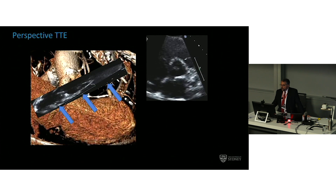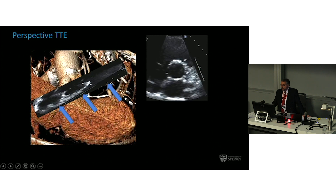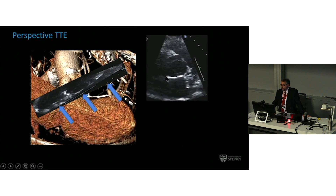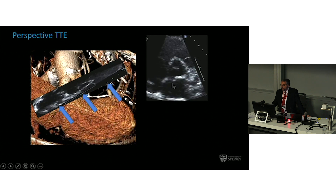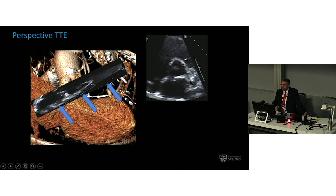In all of transthoracic echo, you're looking from below. Looking at this picture — a typical parasternal short axis — you're standing at the feet or at the apex and looking up. Think about your landmarks: there's the atrial septum, so by definition this is the non-coronary cusp. The most anterior one is always the right coronary cusp, and there's the left atrial appendage — therefore that is the left coronary cusp.